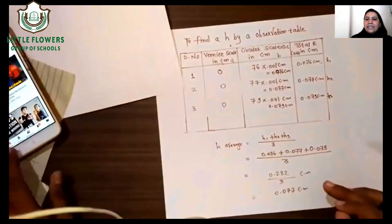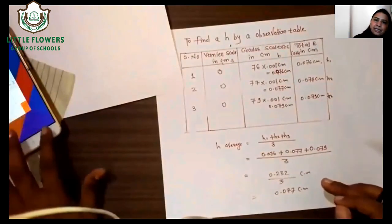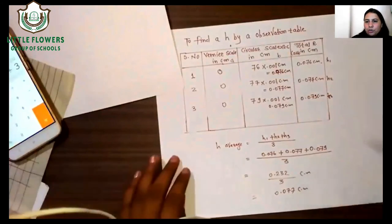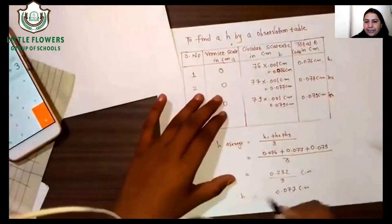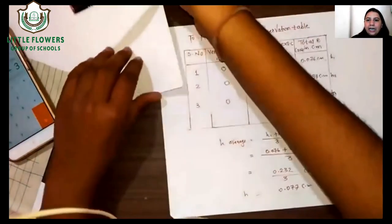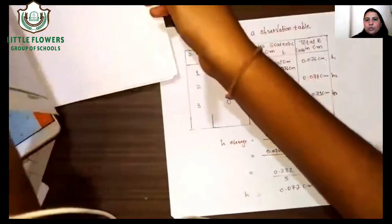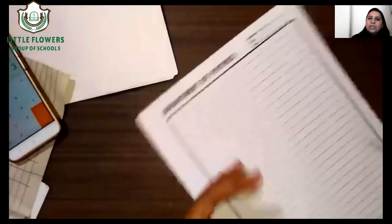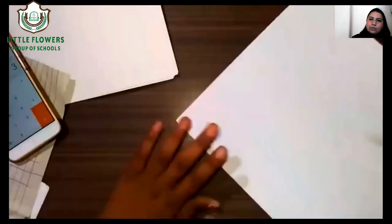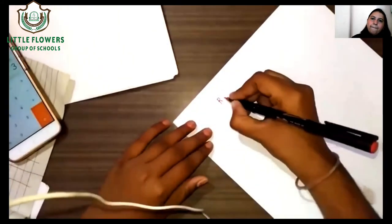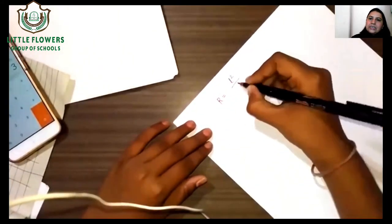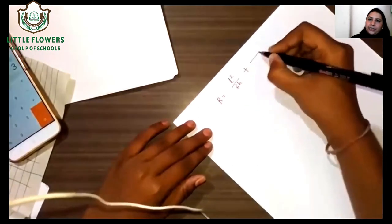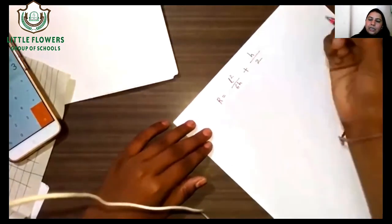Now, after obtaining H, let us return to our formula: R = L² / (6H) + H/2. We have L = 3.5 cm and H = 0.077 cm.